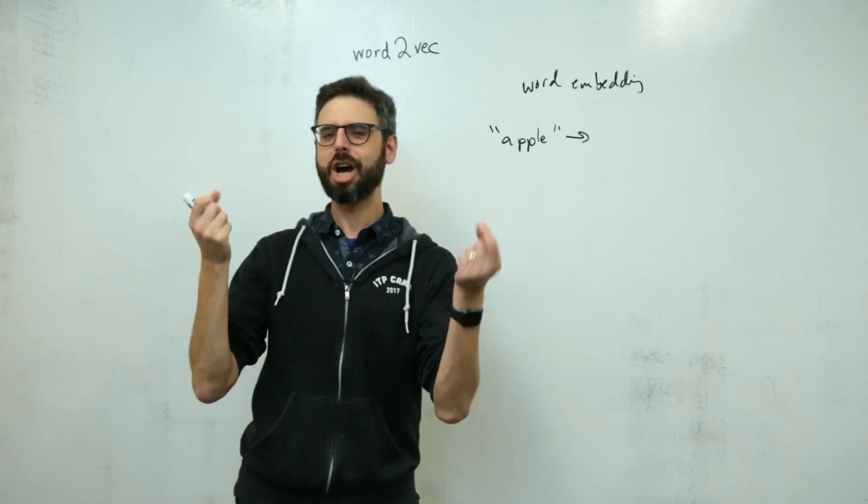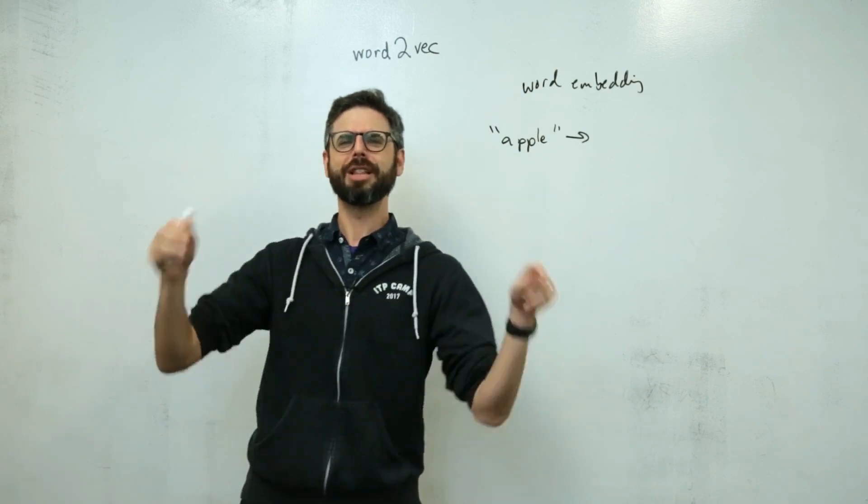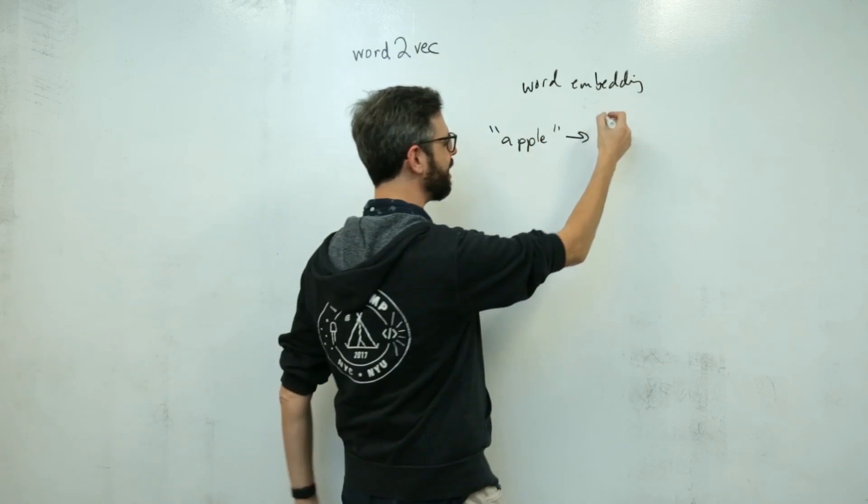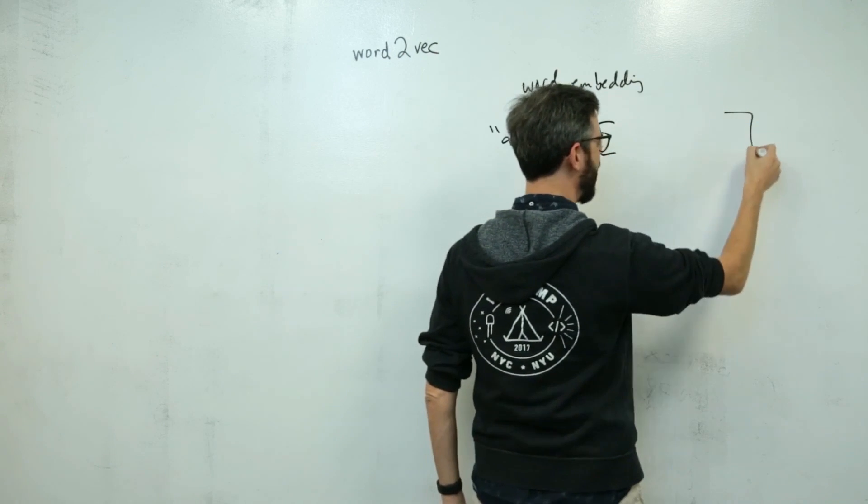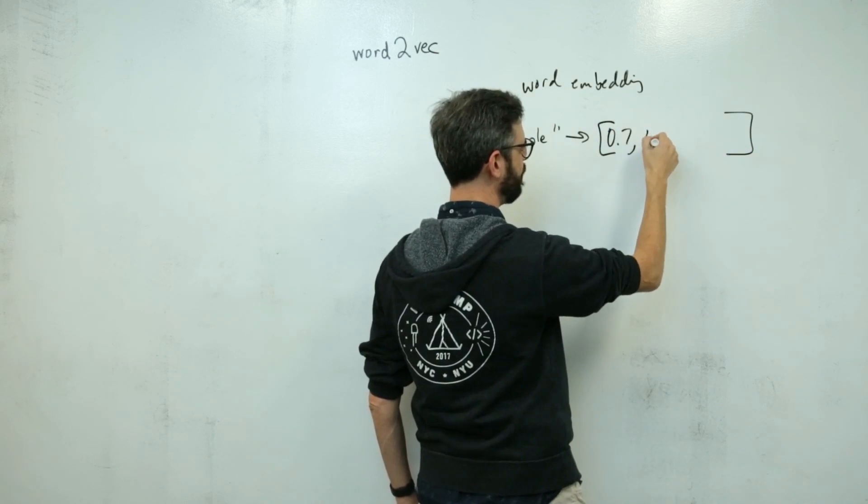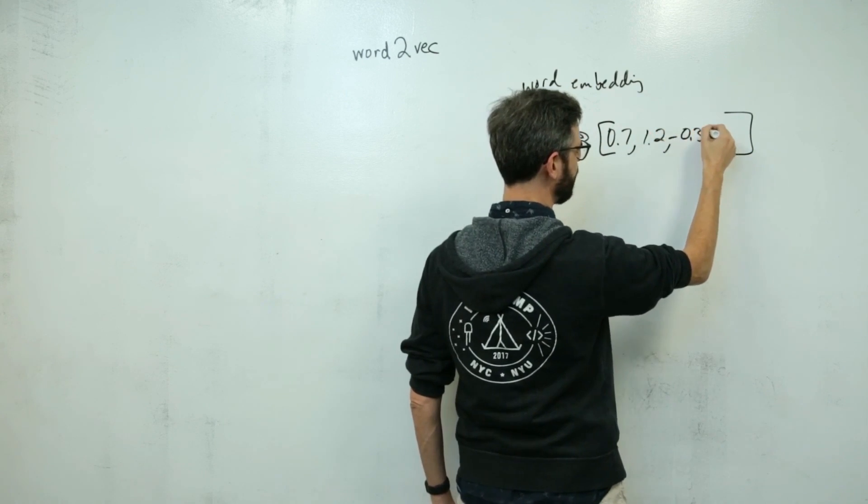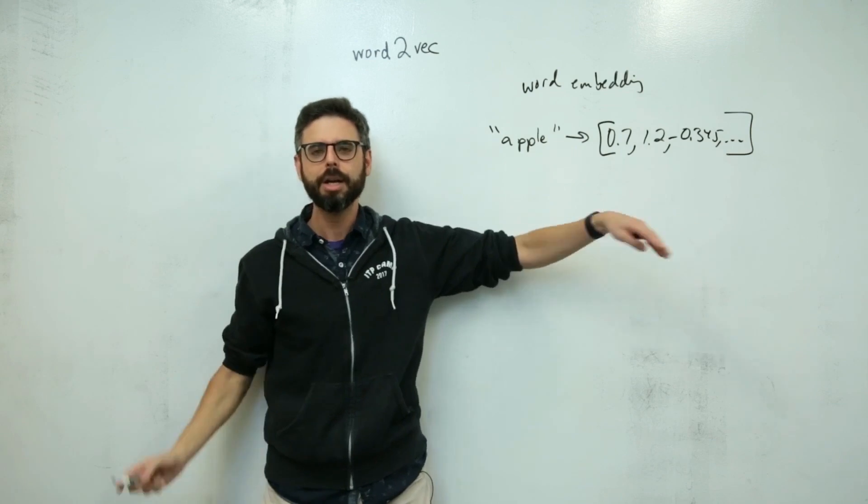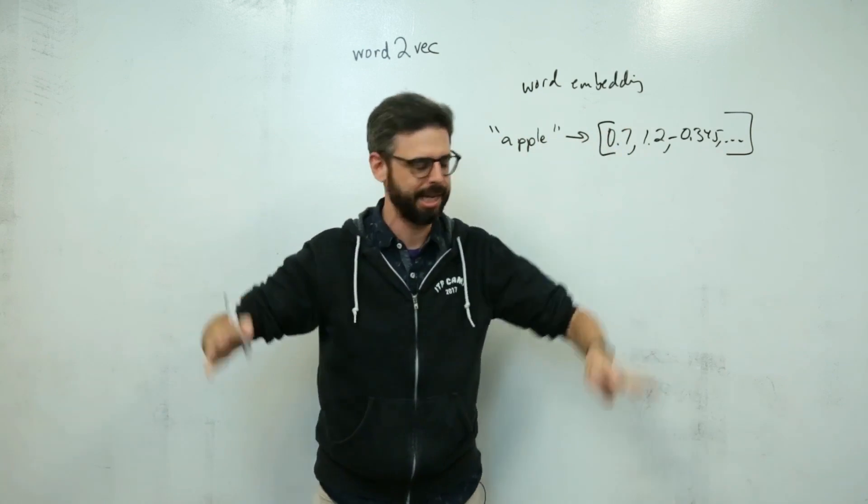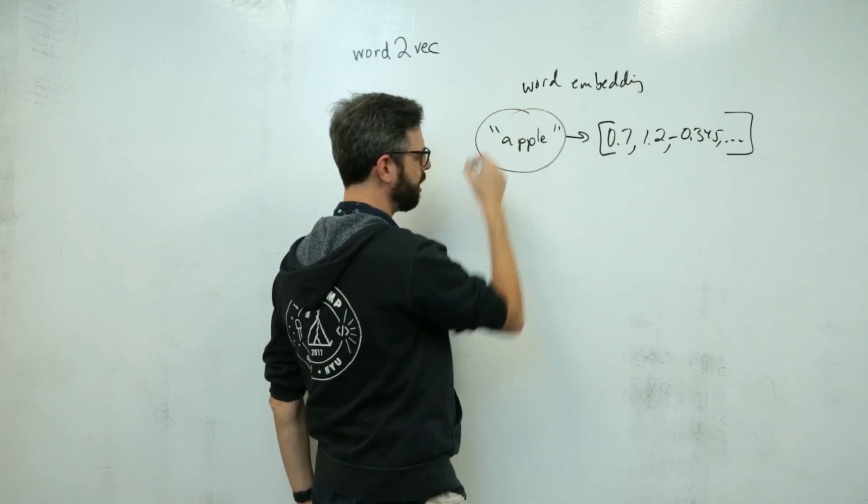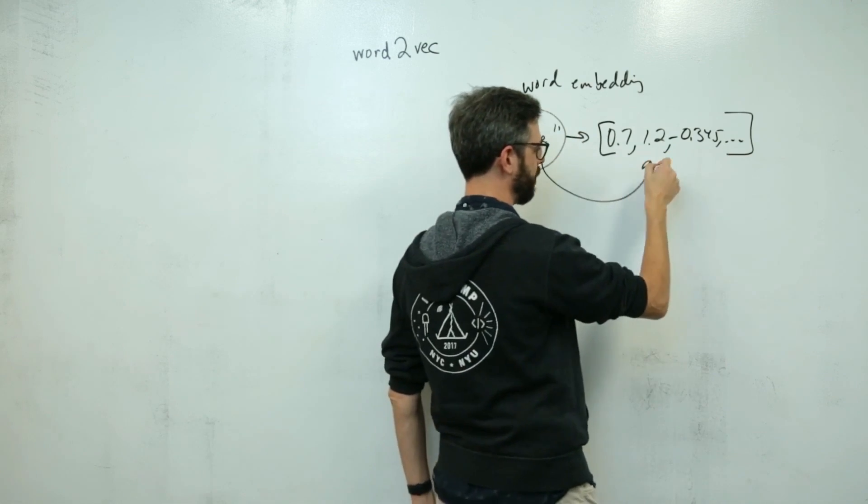We can basically somehow come up with this sort of like numeric mathematical essence of this word as some array of numbers, like 0.7 and 1.2 and negative 0.345, et cetera, et cetera. And there's going to be some amount of numbers in here. This seems like a crazy thing. Why would I ever want to have a word associated with an array of numbers?